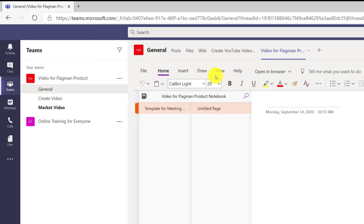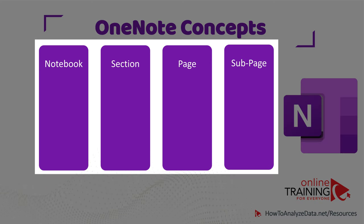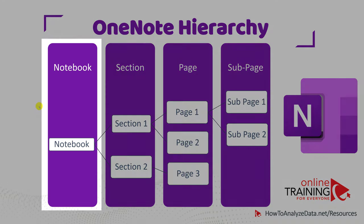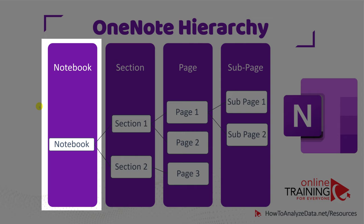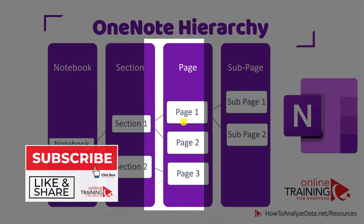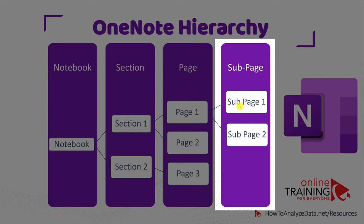Patricia decided to use an existing notebook, selected it, and clicked Save. The first thing is to create a new section — her first section was a template for meeting minutes. Within a section you can create multiple pages. To be effective with OneNote you need to understand its structure: OneNote consists of four main objects — Notebook, Section, Page, and Subpage — in a hierarchical structure. You can have multiple sections in a notebook, multiple pages in a section, and multiple subpages within a page. Patricia organized sections as project milestones: Create Video and Market Video, with pages representing meeting minutes for each milestone.